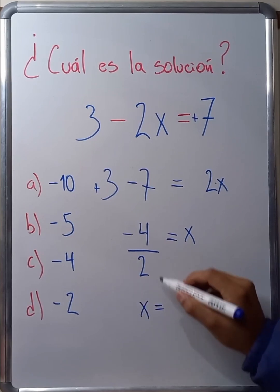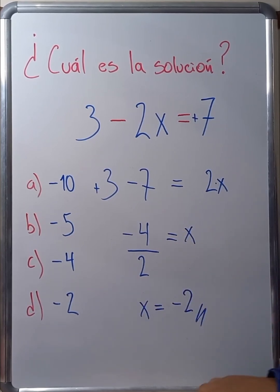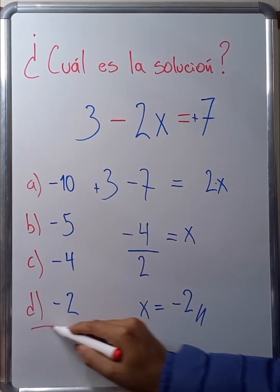So, this will be minus 4 over 2. x will be equal to minus 4 over 2, which is minus 2. From the alternatives, we mark item D.